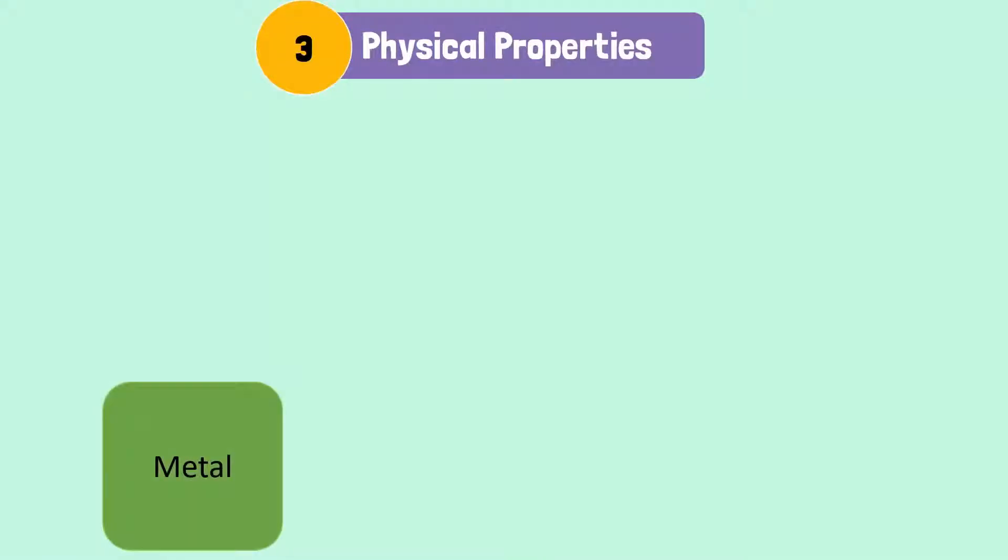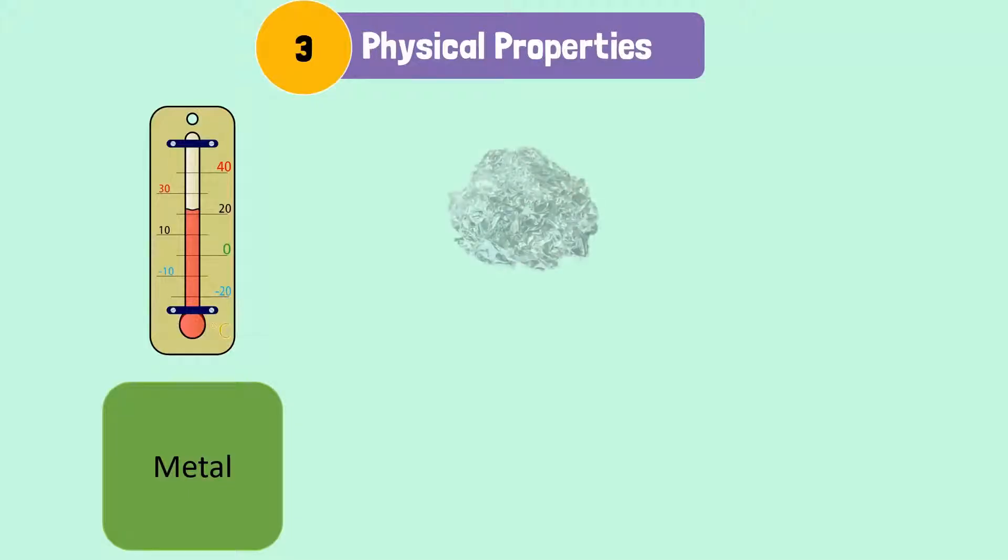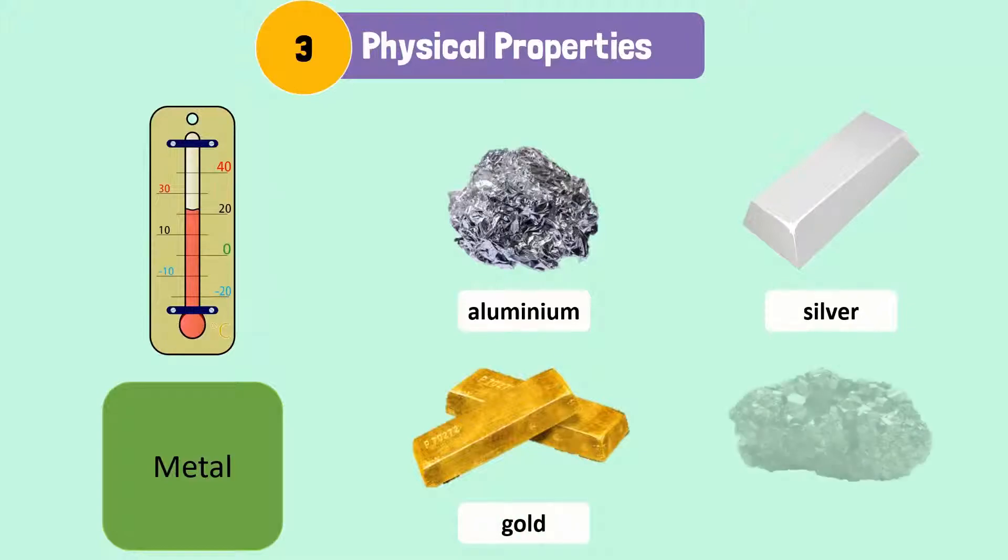Metals, on the other hand, are mostly solids at room temperature. Some common examples are aluminium, silver, gold and iron.